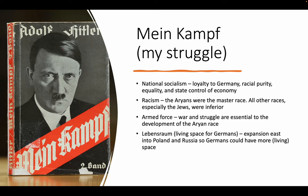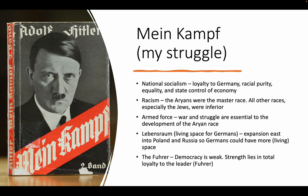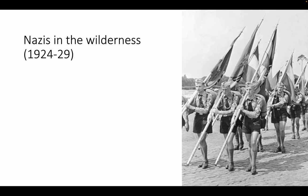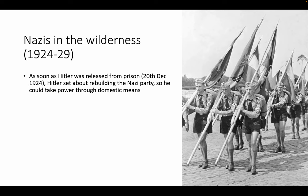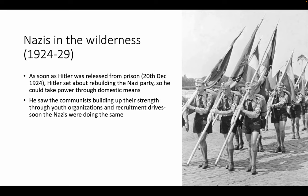Mein Kampf outlined National Socialism: loyalty to Germany, racial purity, equality, and state control of the economy. Racism was central — the Aryans were the master race; all other races, especially the Jews, were inferior. War and struggle were essential to the development of the Aryan race. He called for Lebensraum — expansion east into Poland and Russia for more German living space. Democracy was weak; strength lay in total loyalty to a single leader, the Fuhrer. As soon as Hitler was released from prison on 20th December 1924, he set about rebuilding the Nazi party to take power through democratic means.